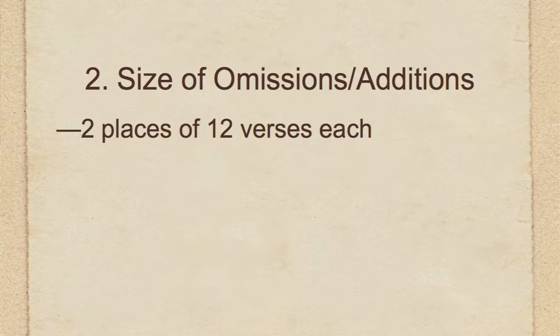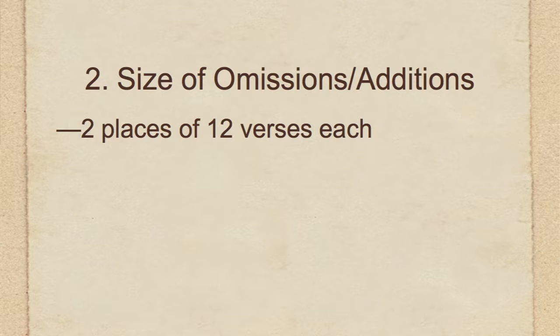What's the size of omissions and additions? The smallest, by definition, would be a single word. The largest is as much as twelve verses, and we have two places in the New Testament where twelve whole verses were either added to or deleted from the text. This certainly cannot be considered unintentional, because two scribes in different parts of the ancient world could not possibly have come up with exactly the same wording for twelve verses. So there must be some kind of genealogical connection among these manuscripts going back very early.